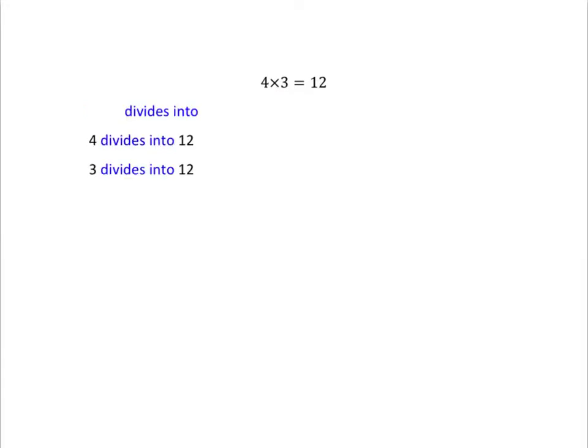The next one: divides into. What we can say here is that 4 divides into 12 with no remainder, and 3 divides into 12 without giving us a remainder. This is because if you take 12 and divide it by 4, you get the answer 3. We can also say that 12 divided by 3 equals 4, or 12 divided by 4 is equal to 3. Those are the two different ways we use the words divides into or divided by.